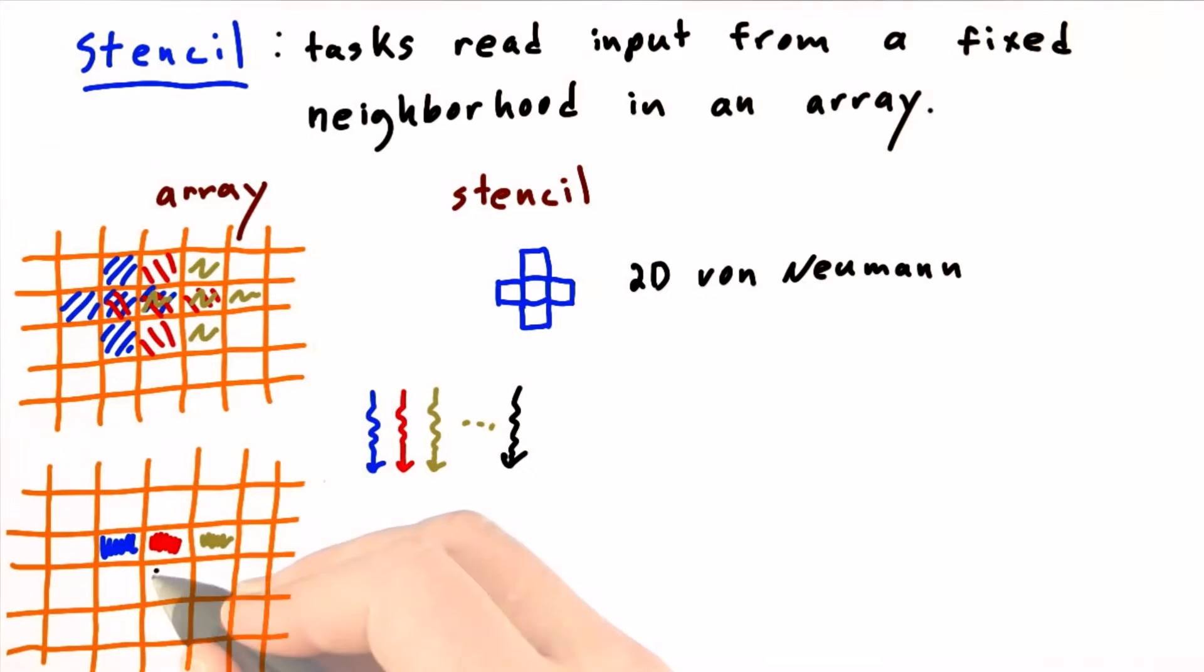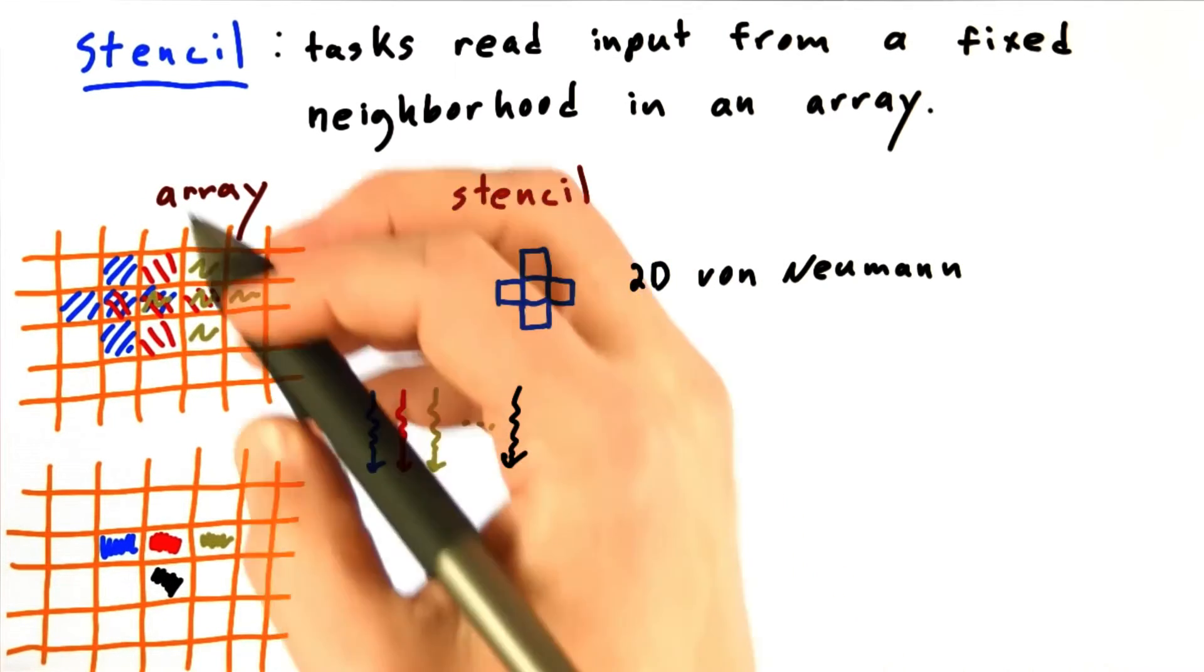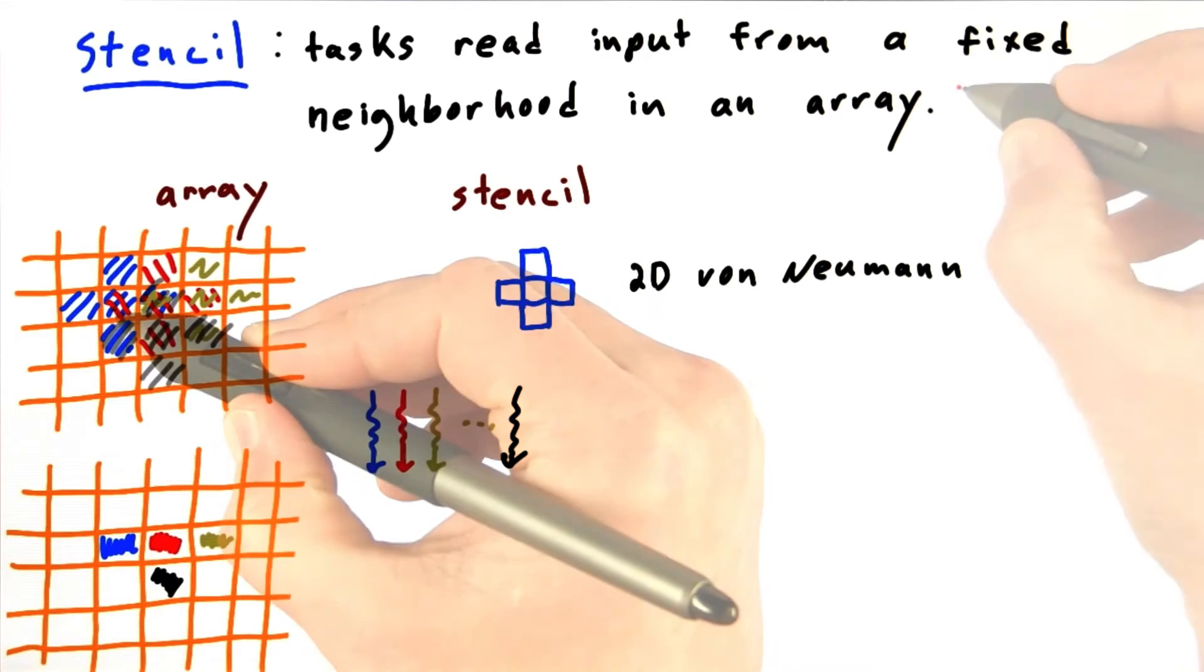Eventually there will be some other thread responsible for, say, writing to this value, and that thread is going to access these values.